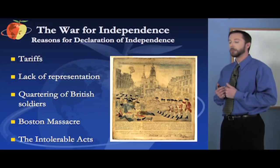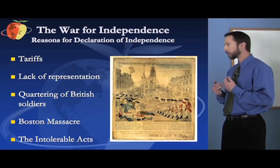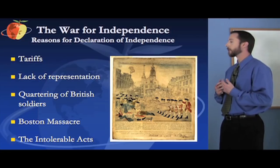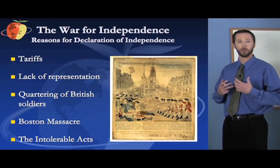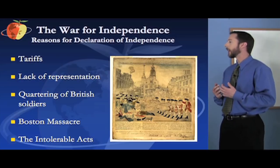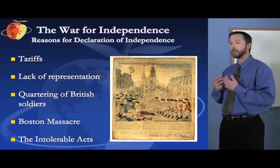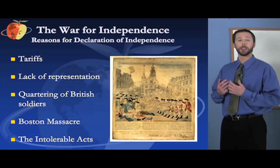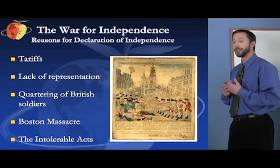First of all, tariffs. Tariffs are basically taxes on imports, so things that are coming into the colonies. For example, the Stamp Act taxed printed matter, so things like newspapers and anything that was printed. The Townshend Acts taxed a variety of different goods, and one of the goods was tea. They basically repealed the Townshend Act later, except for the tax on tea, or the tariff on tea.